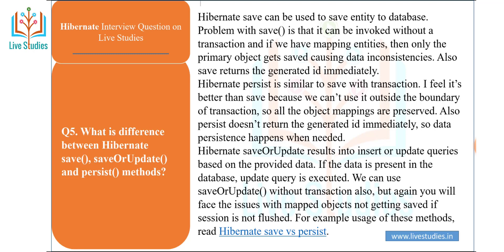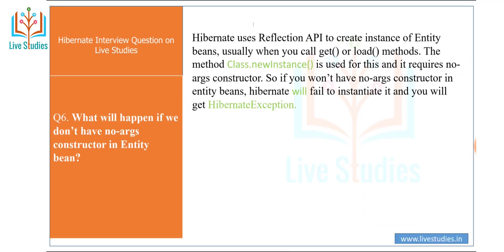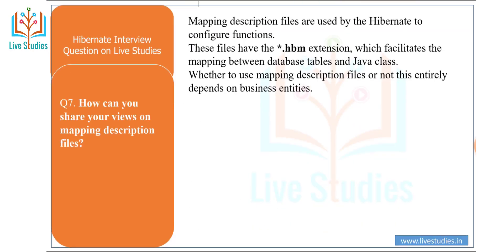Another question: what will happen if we don't have a no-argument constructor in an entity bean? Hibernate uses the Reflection API to create instances of entity beans — specifically when you call get() or load(), the Class.newInstance() method is used, which requires a no-argument constructor. If you do not have a no-argument constructor, Hibernate will fail to instantiate the entity bean and you will get a HibernateException.